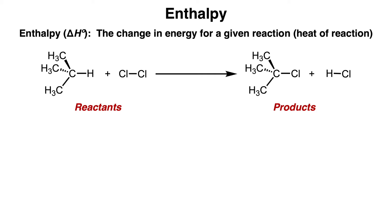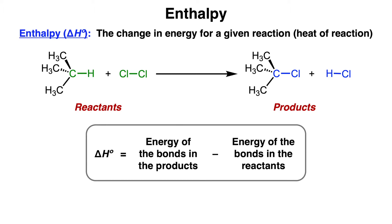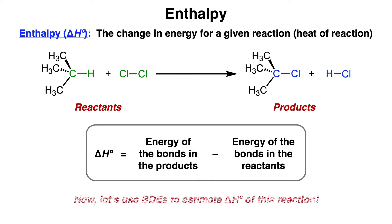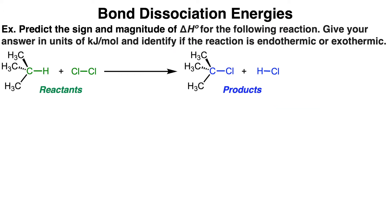The total change in enthalpy for a reaction is called the heat of reaction. In this example, isobutane and dichlorine react to form 2-chloro-2-methylpropane and hydrochloric acid. For this reaction to occur, a carbon-hydrogen bond and a chlorine-chlorine bond in the reactants, shown in green, have to break. Looking at the products, a carbon-chlorine bond and a hydrogen-chlorine bond, shown in blue, have to form. We can use bond dissociation energy, or BDE, to quantitatively estimate the overall heat of this reaction.